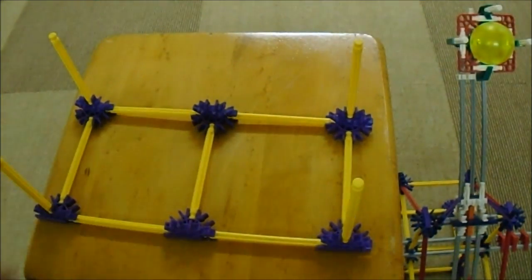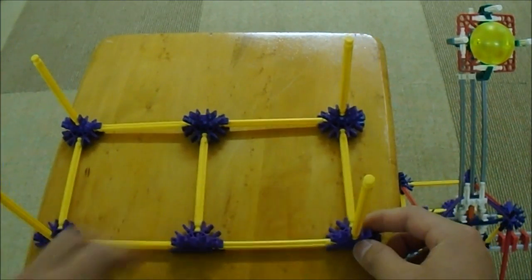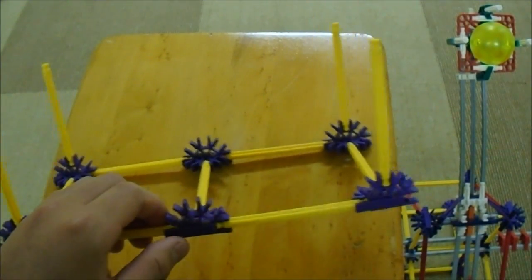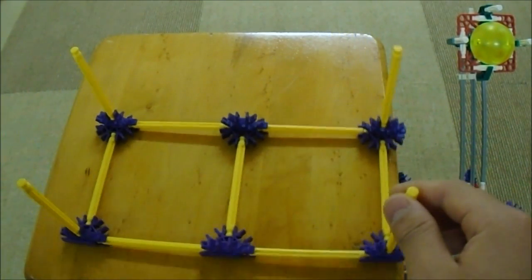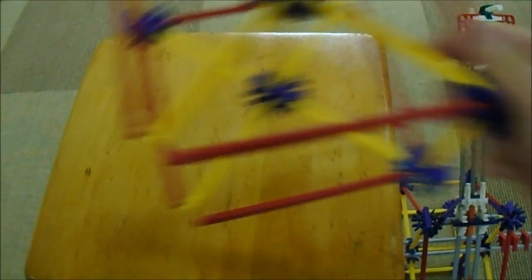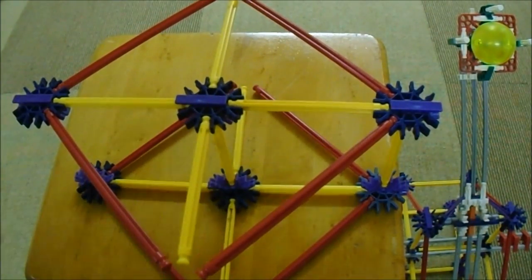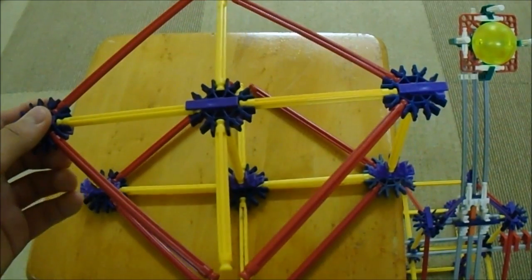So first, you're going to want to make this structure. And as I explained, it's very straightforward. You just need six of these and eleven yellow rods. And then you'll want to make this structure. And I'll just let you look at that.